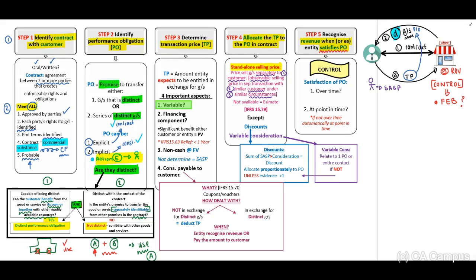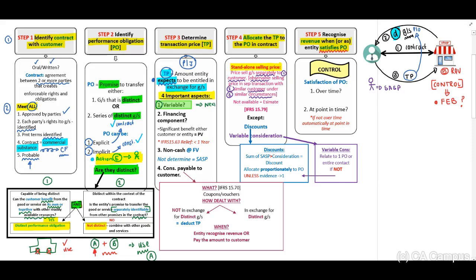Step three: the transaction price. This is the amount the entity expects to be entitled to in exchange for goods or services. For example, consider someone who regularly buys clothing, tries it at home, and returns items — do you think the entity expects to receive all of that consideration? This requires professional judgment. There are four important aspects when discussing transaction price: variable consideration, financing component, non-cash considerations, and consideration payable to the customer.